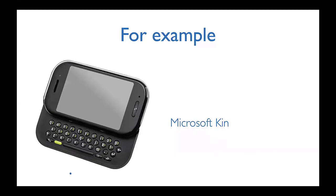Another example: the Microsoft Kin. This was a device released by Microsoft meant to be a social media device for Facebook, Instagram, MySpace, and so forth. After three months they pulled it off the market having sold about four units. It failed to solve the right problem — they hadn't anticipated what people really wanted to do with these devices. Bizarrely, if somebody posted to Facebook it wouldn't go out for several hours, completely defeating the point of having the device.